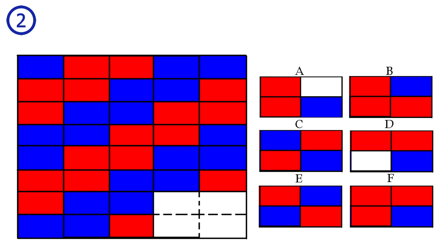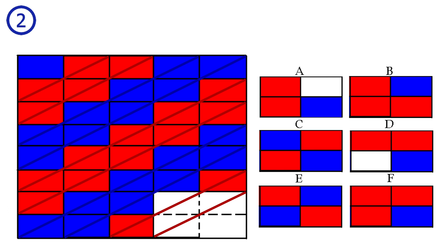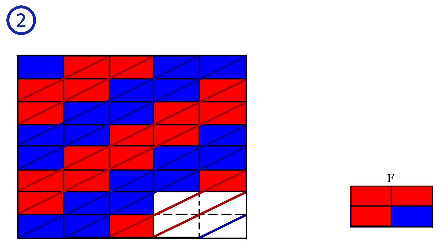Puzzle number two. These diagonals repeat from top right to bottom left. We have a simple pattern of the diagonals: two red, two blue, two red, two blue, two red, two blue. Answer F is correct.